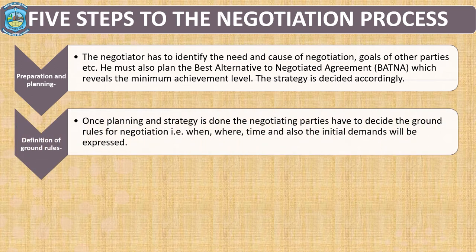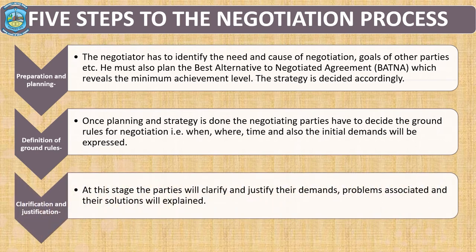The second step under the negotiation process is defining the ground rules. Once planning and strategy is done, the negotiating parties have to decide the ground rules for negotiation — that is, when, where, at what time — and also the initial demands of the negotiation will be expressed here. The third stage is clarification and justification. At this stage, the parties will clarify and justify their demands, and problems associated with it and other solutions will be explained.